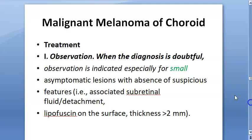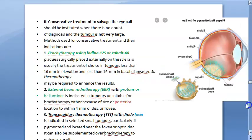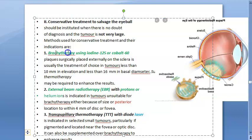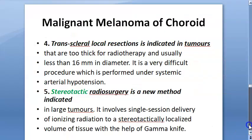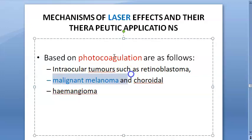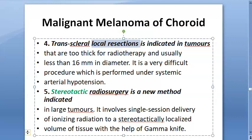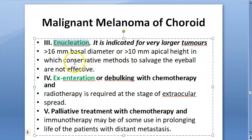For treatment: small tumors are observed. Brachytherapy using iodine or cobalt is used. Radiotherapy and thermotherapy with diode laser (photocoagulation) are also options. Local resection and stereotactic radiosurgery (gamma knife radiosurgery) are additional modalities.